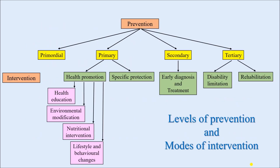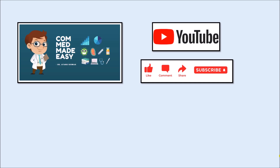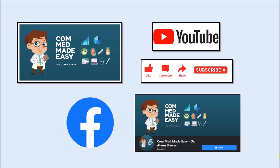To summarize: there are four levels of prevention — primordial, primary, secondary, and tertiary. Primary prevention has two modes of intervention: health promotion and specific protection. Under health promotion we have health education, environmental modification, nutritional intervention, and lifestyle and behavioral changes. In secondary prevention, the mode of intervention is early diagnosis and treatment. In tertiary prevention, the modes of intervention are disability limitation and rehabilitation. If you like the video or have learned something new, please subscribe, share with batchmates and friends, and follow our Facebook page. Take care and see you in our next video.